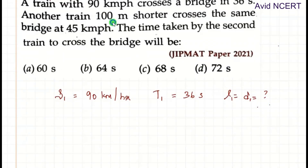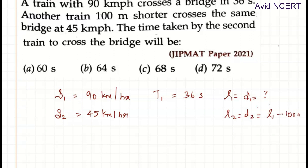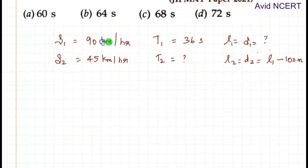Another train 100 meters shorter crosses the same bridge at 45 km per hour. So here we have speed of the second train: S2 equals 45 km per hour. We know the distance D2, which equals L2, is 100 meters shorter than train 1, which is L1 minus 100 meters. The time taken by the second train to cross the bridge — so T2 is the one we have to find.